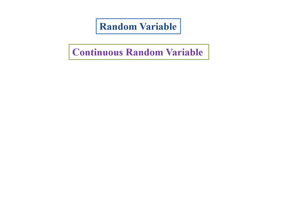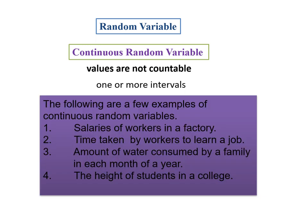For random variables, we also have the continuous random variable. The values are not countable — they span one or more intervals. The following are a few examples of continuous random variables: salaries of workers in a factory, time taken by workers to learn a job, amount of water consumed by a family in each month of a year, and the height of students in a college.